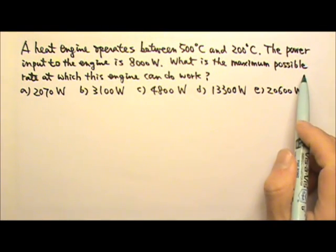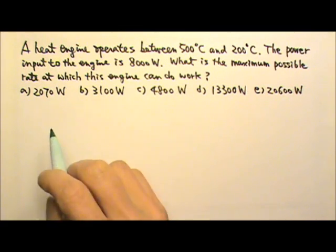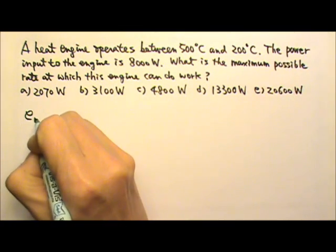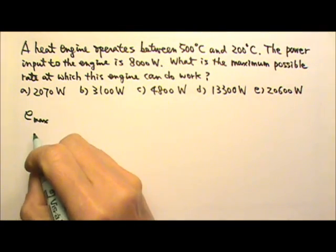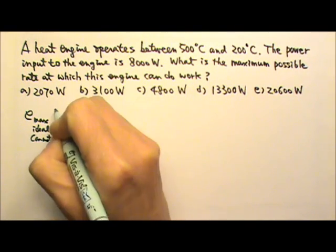For the maximum possible rate at which this engine does work, we need to look at the maximum possible efficiency for the heat engine, which means ideal efficiency or Carnot efficiency.